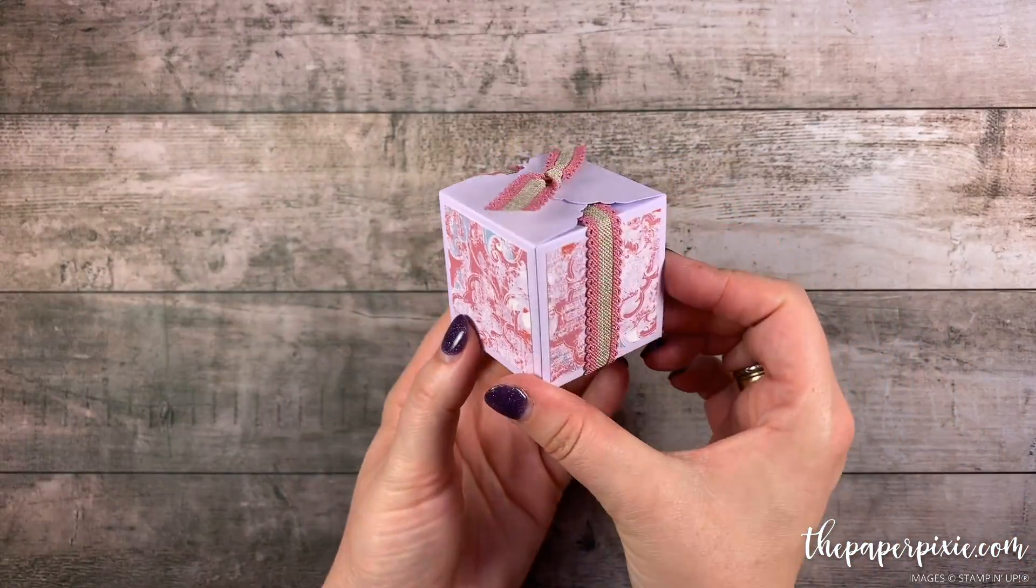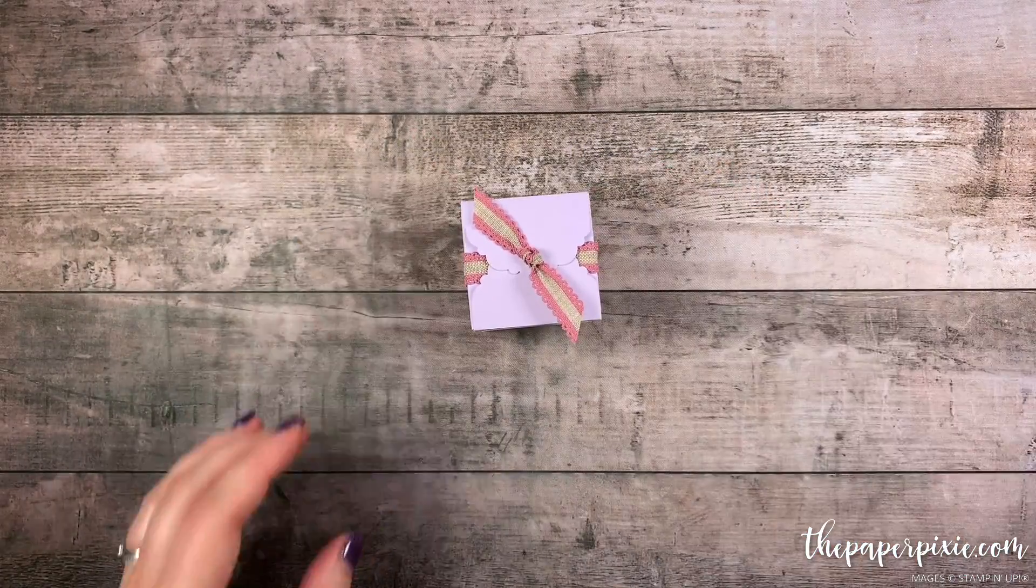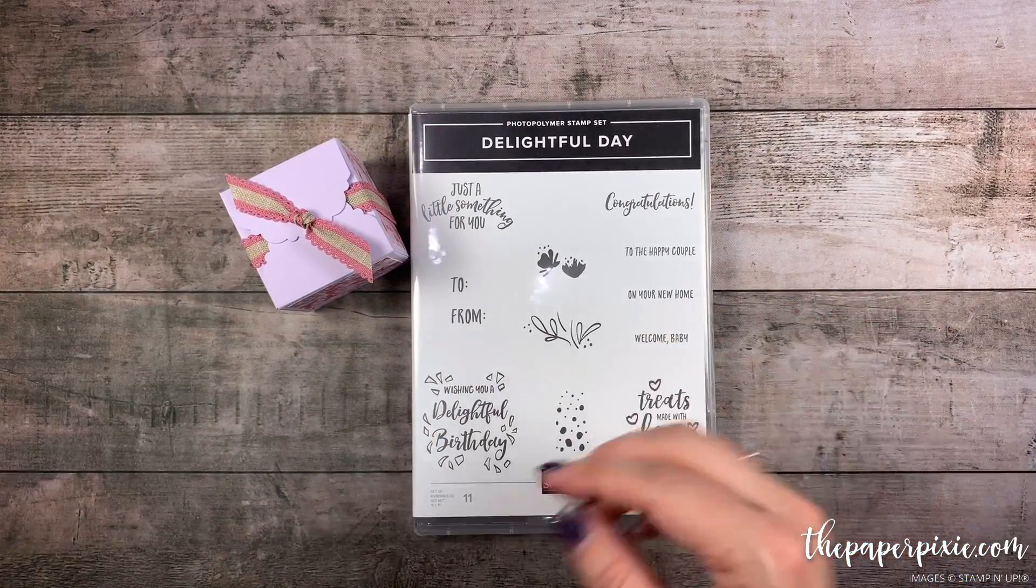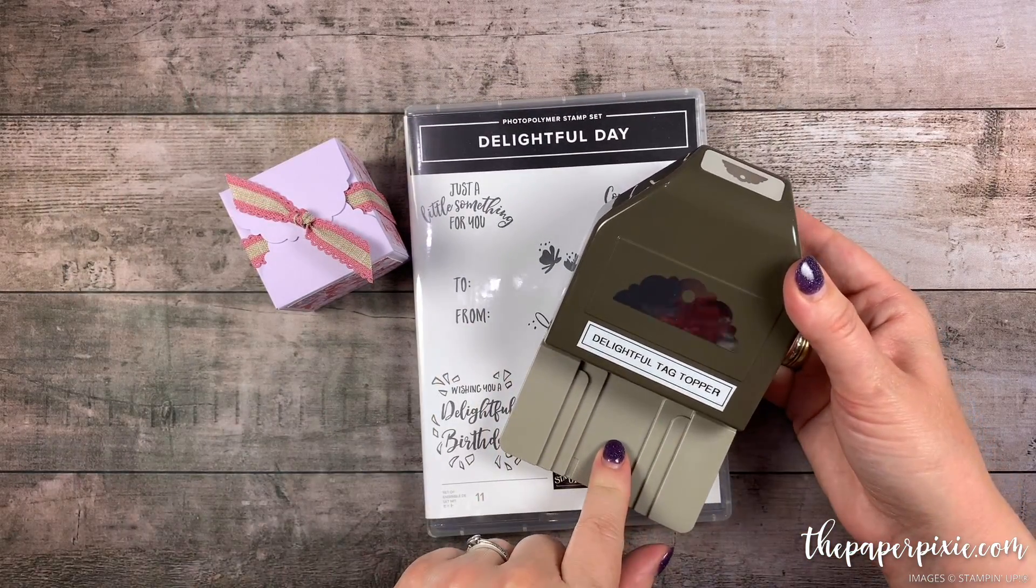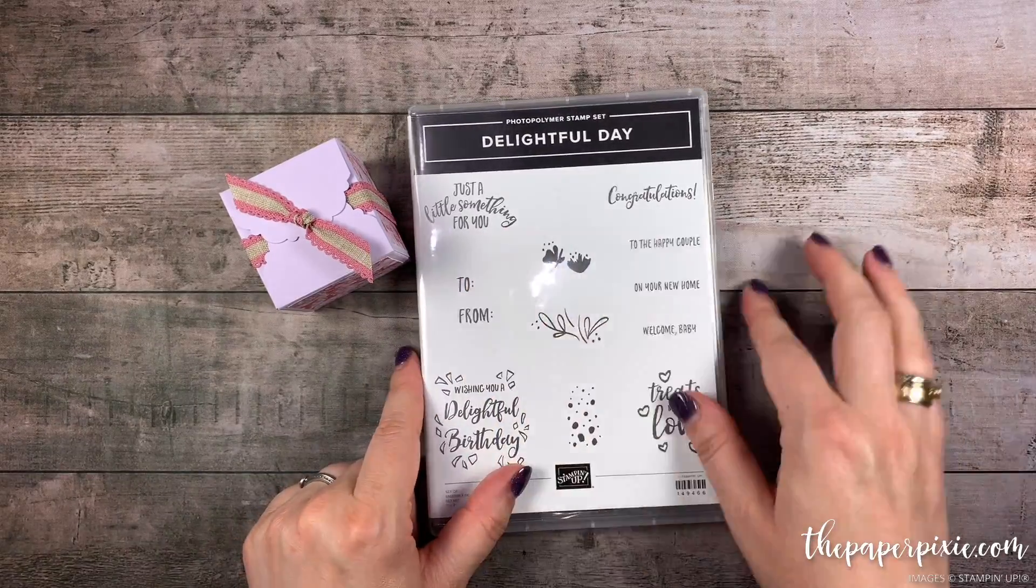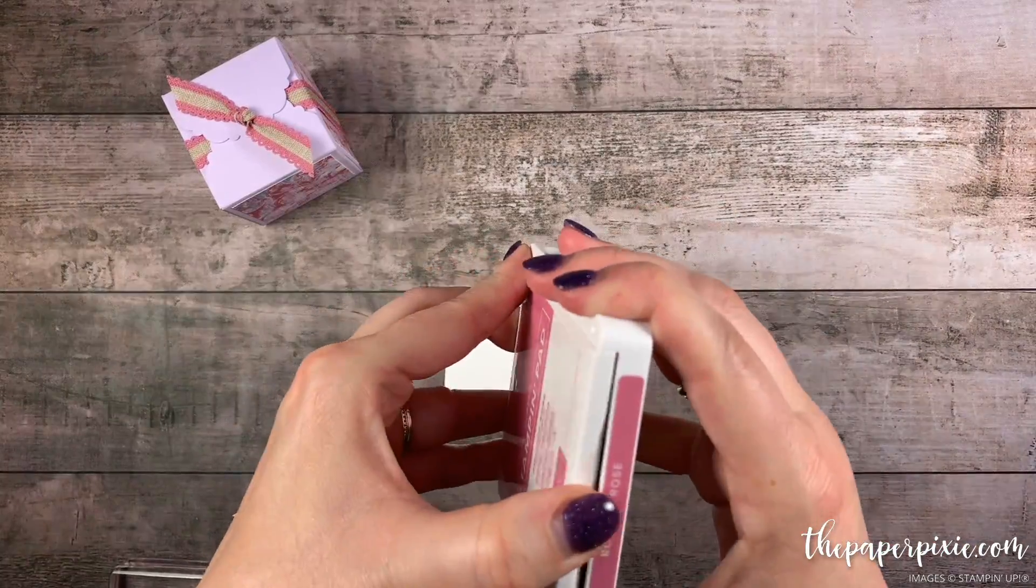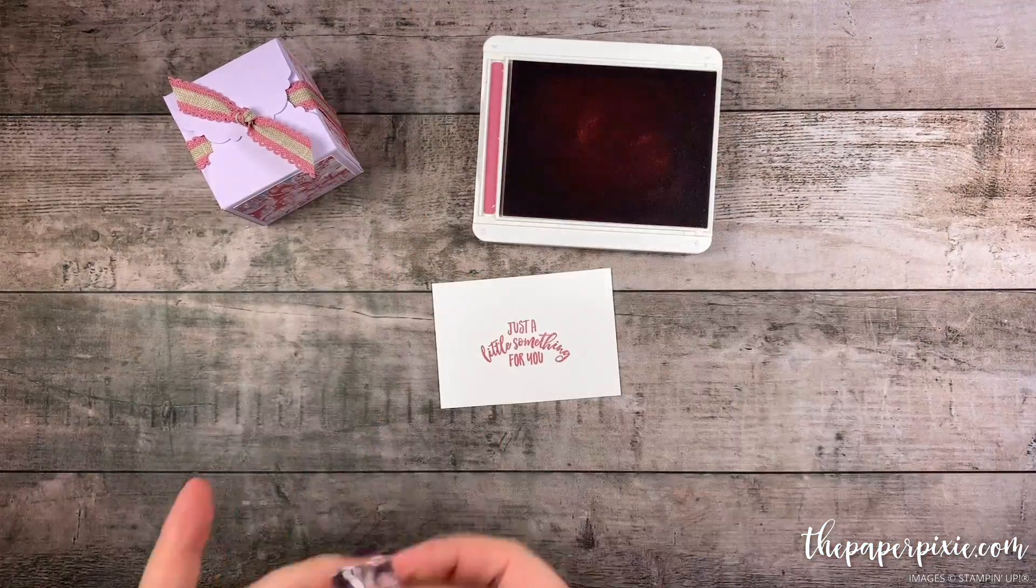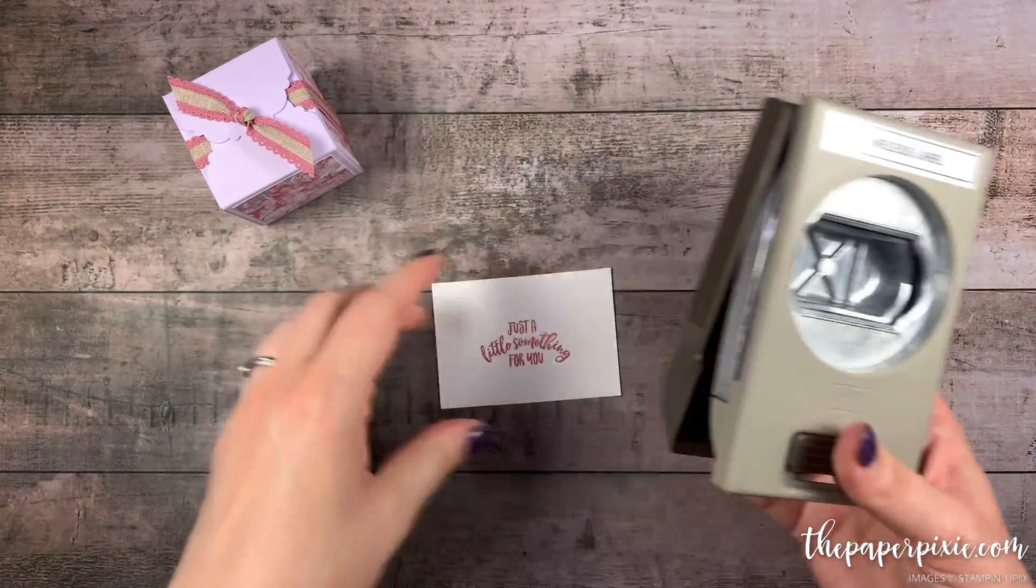How cute is that? And then let's just do a little bit of stamping. I'm going to use the Delightful Day Stamp Set which comes in the Delightful Day Bundle paired with the Delightful Tag Topper Punch. And the Sentiment Just A Little Something For You. We're going to stamp that in Rococo Rose on Whisper White.